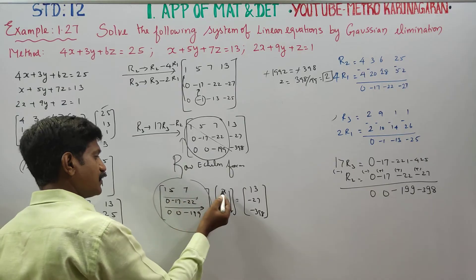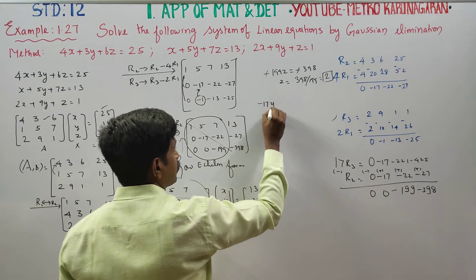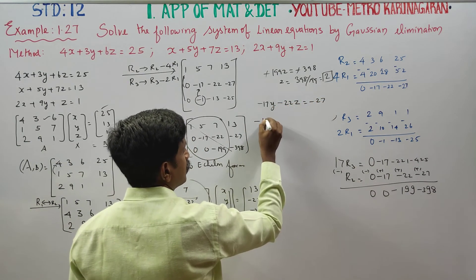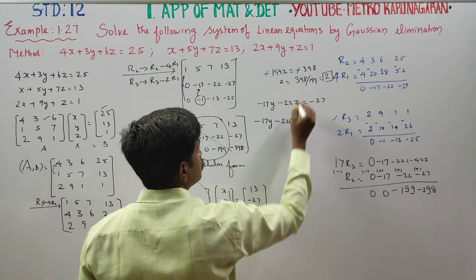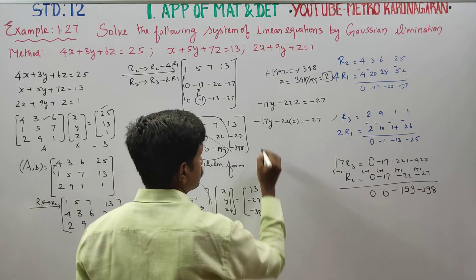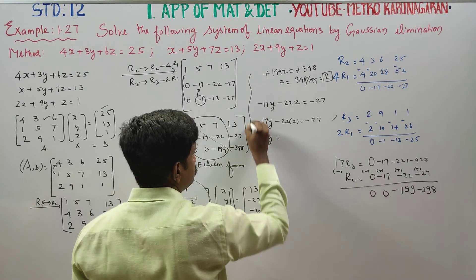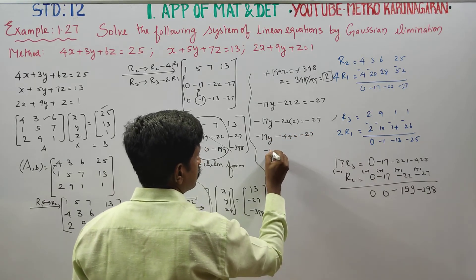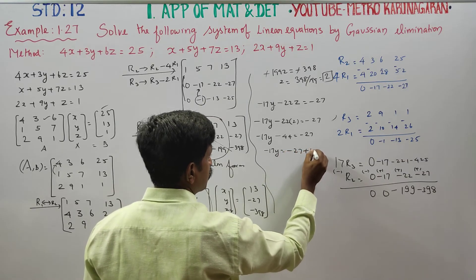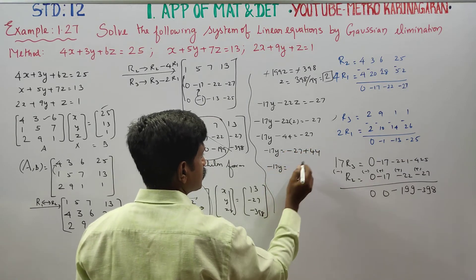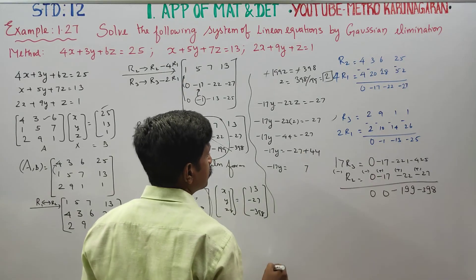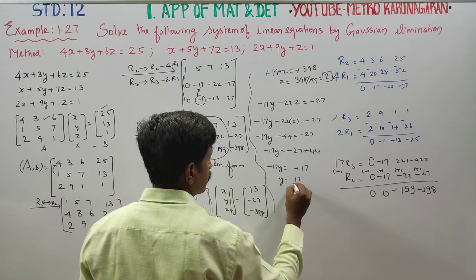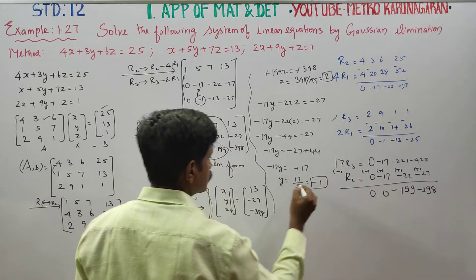Back substitution. 0 into x is 0. Minus 17 into y, minus 22 into z equals minus 27. Minus 17y minus 44 equals minus 27. Minus 17y is equal to minus 27 plus 44. Minus 17y is equal to 17. y is equal to 17 divided by minus 17. Answer is minus 1.